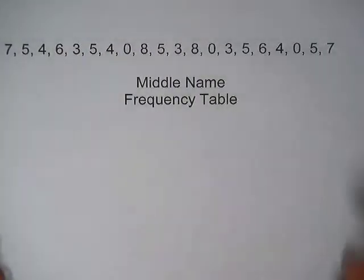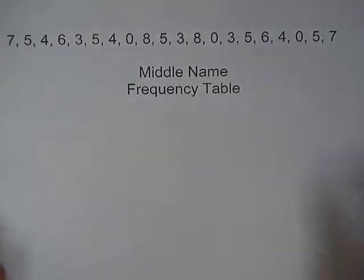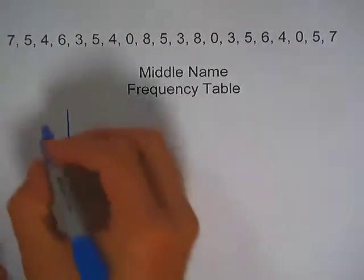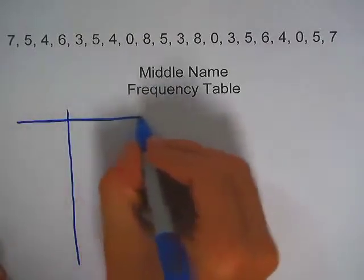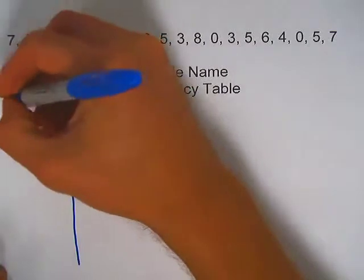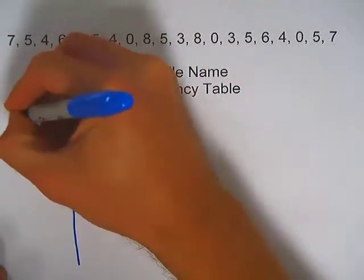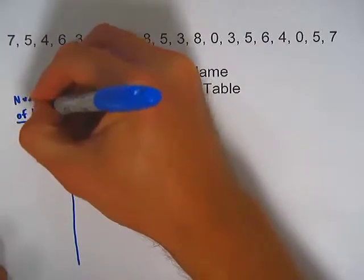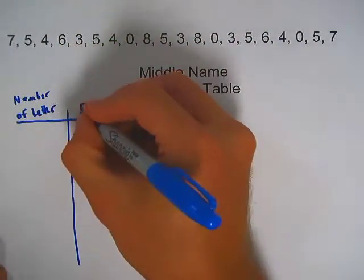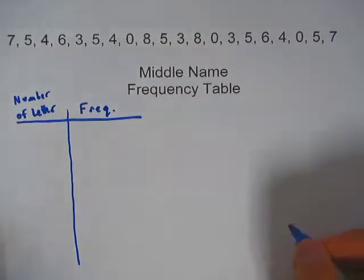Alright, so I have the data listed up here and room down here to make the frequency table. So we need two columns. Now what I'm going to graph is the possible values of the variable here. So the variable is number of letters. And then in this column I'm just going to abbreviate frequency as FREQ. That's a pretty common abbreviation for frequency.